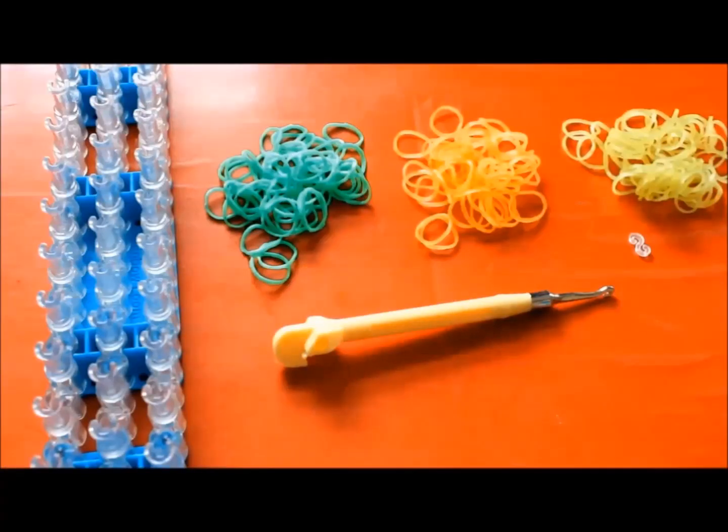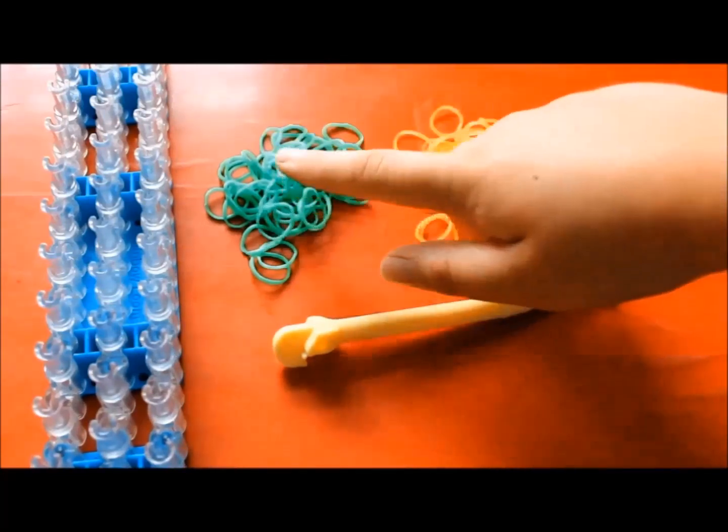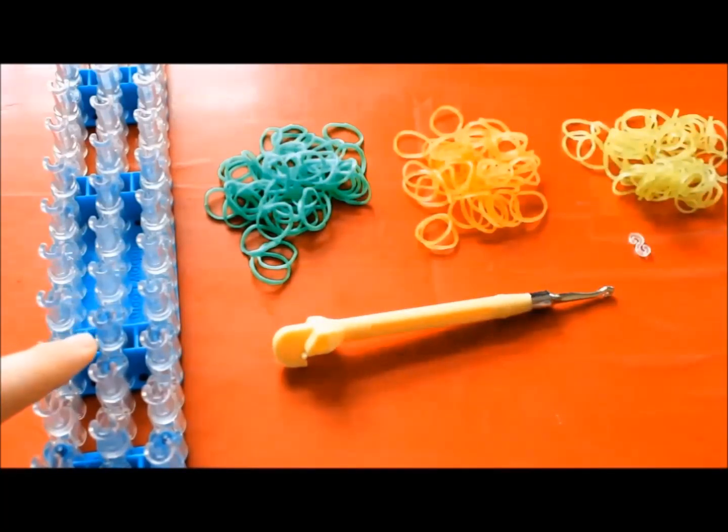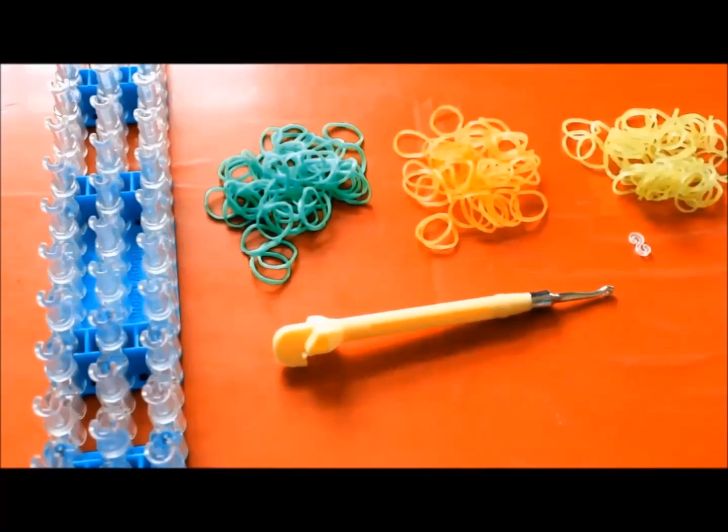It looks like this. To make it, you will need three colors of rubber bands. I'm gonna be using green, orange and yellow, a loom, a hook and an S-clip or a C-clip.